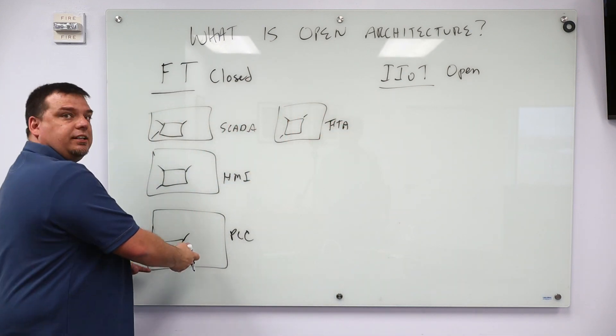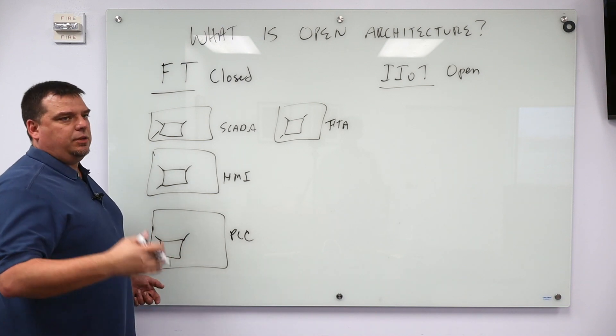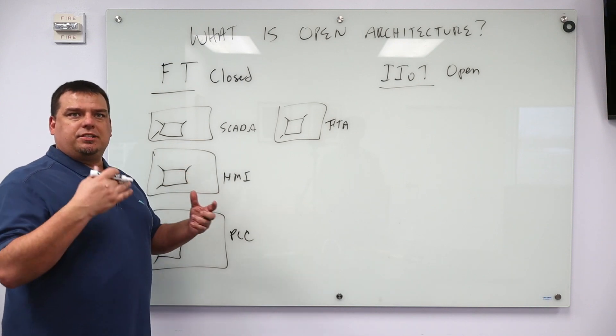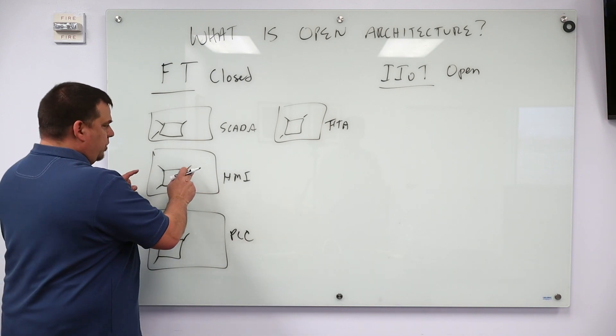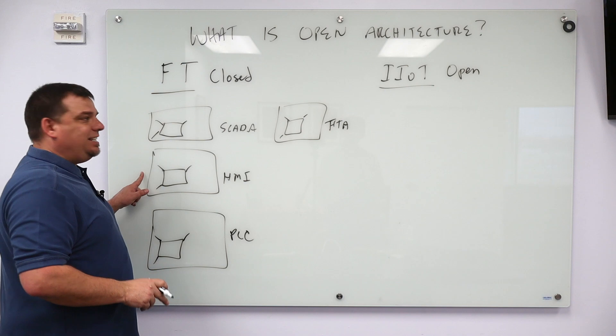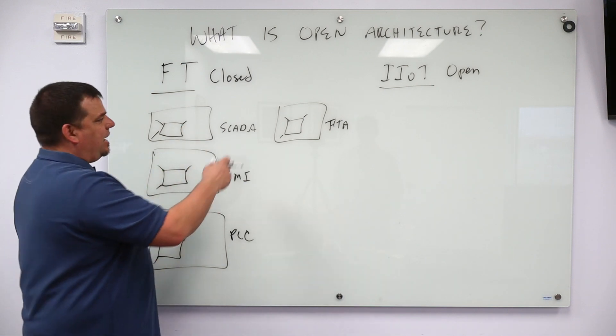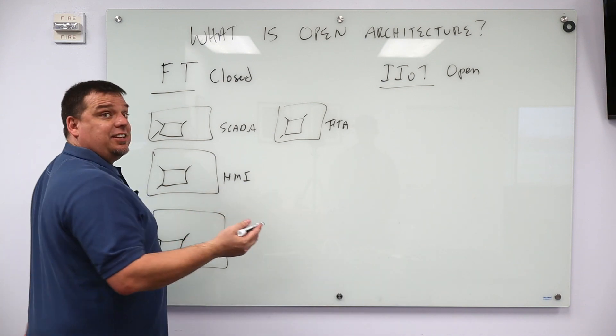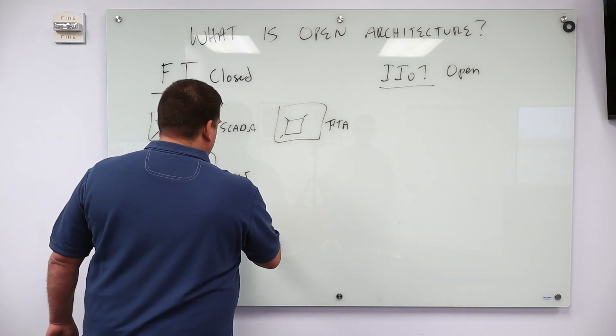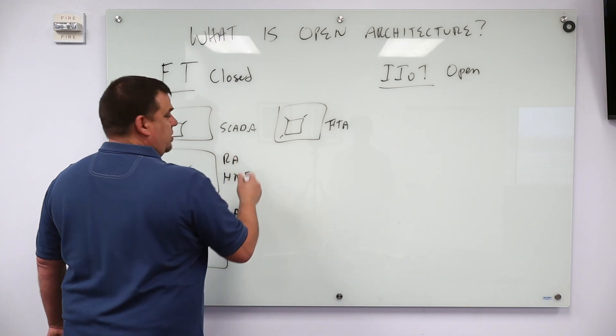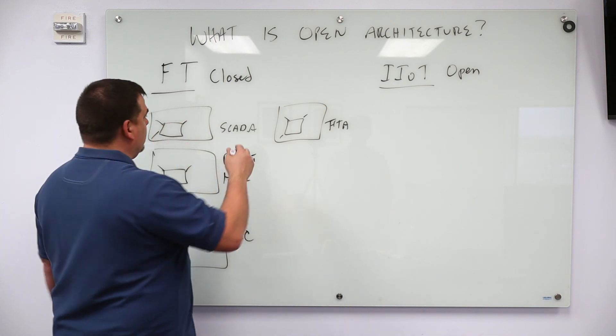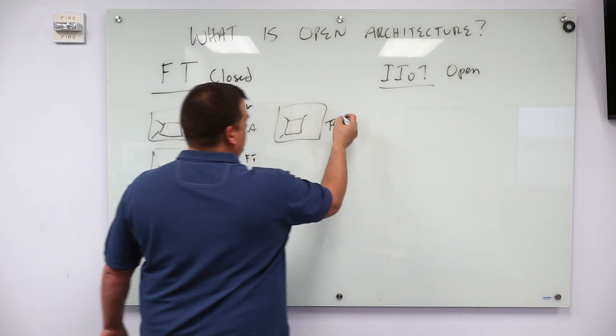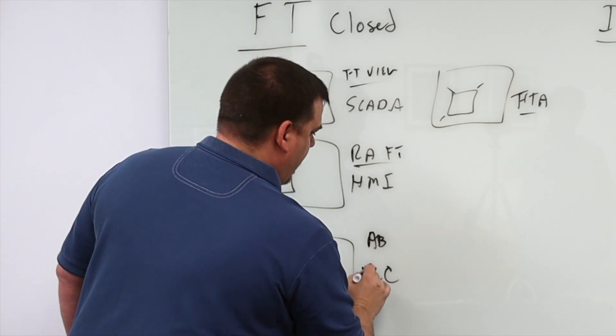I can use the PlantPAX motor or the PlantPAX valve. It maps to an object in the HMI, which maps to an object in the SCADA, which maps to an object in FactoryTalk Analytics. So as long as I am using Allen Bradley PLCs, Rockwell Automation FactoryTalk HMI, PanelView Plus, as long as I'm using FactoryTalk View and FactoryTalk Analytics, then I'm golden.